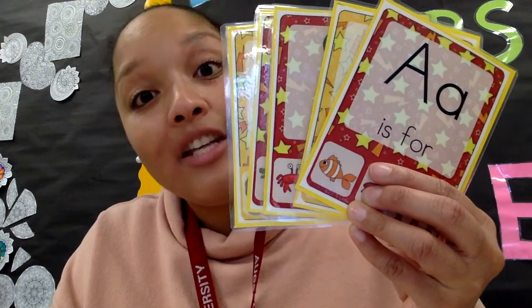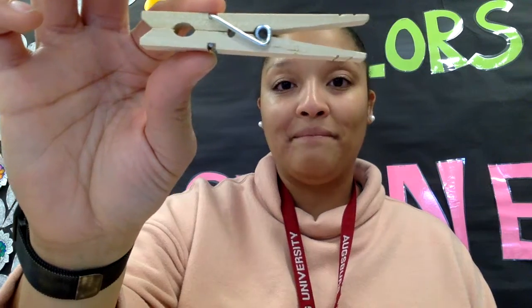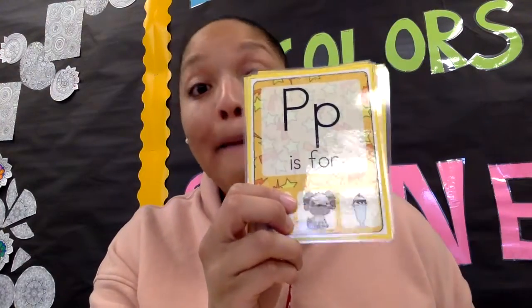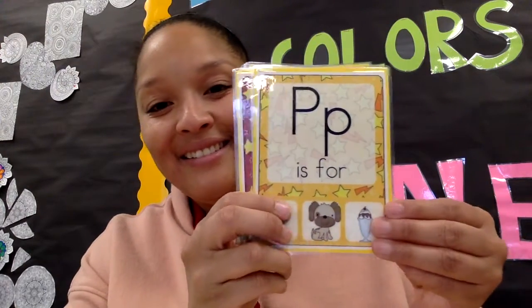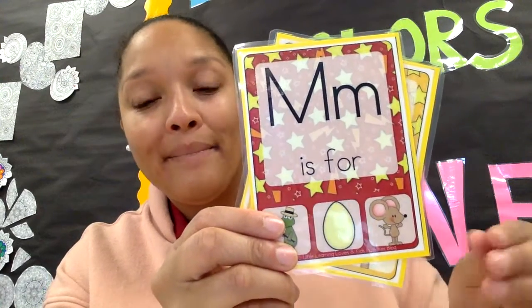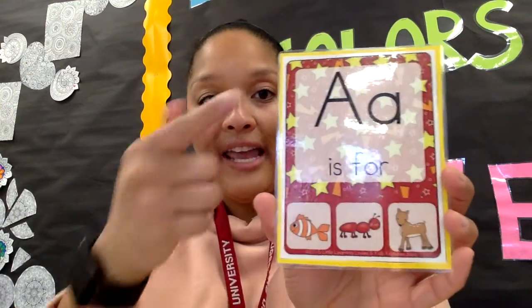Hello! We are going to do the Alphabet Clothespin activity. For this activity, you need the alphabet cards and you need the clothespin — you only need one for this activity. You also need the letters A, P, F, M, and D. So can you find those letters? As soon as you find those letters, let's look at our first letter A.